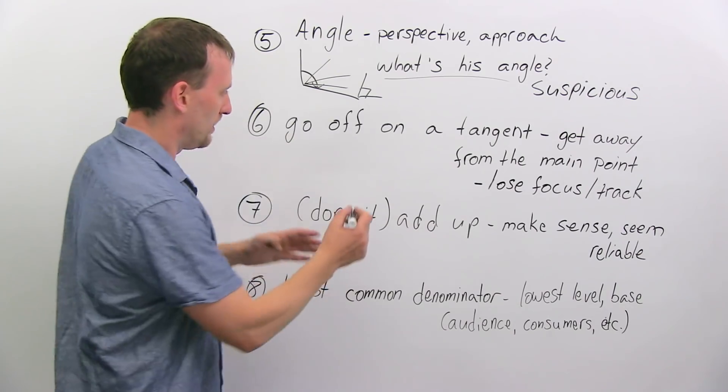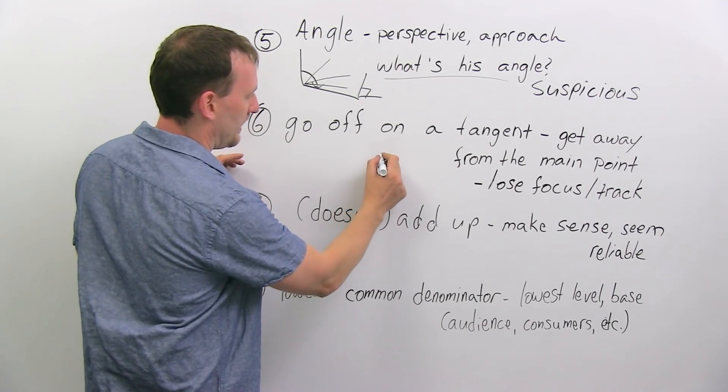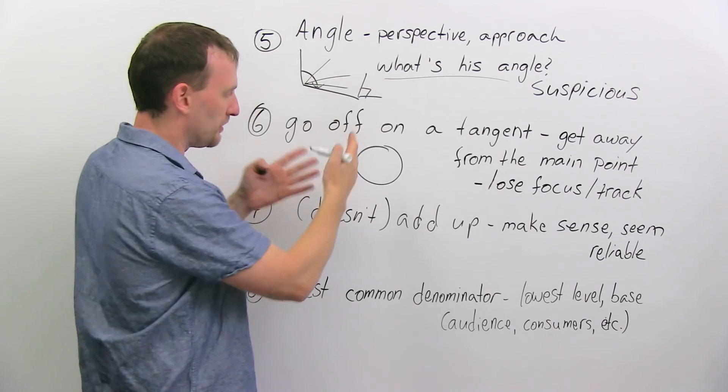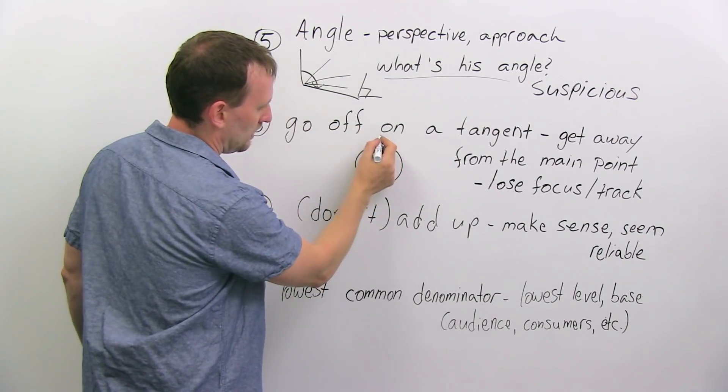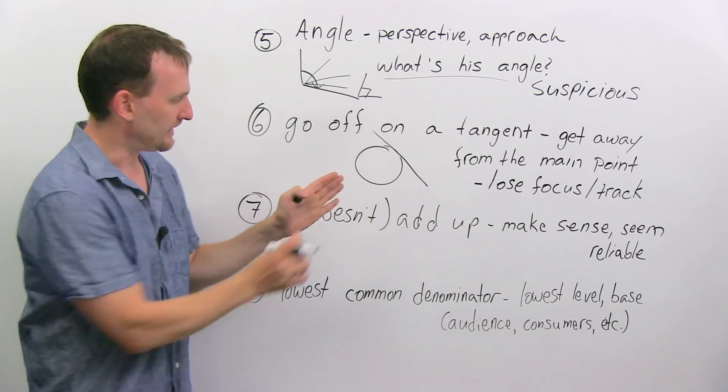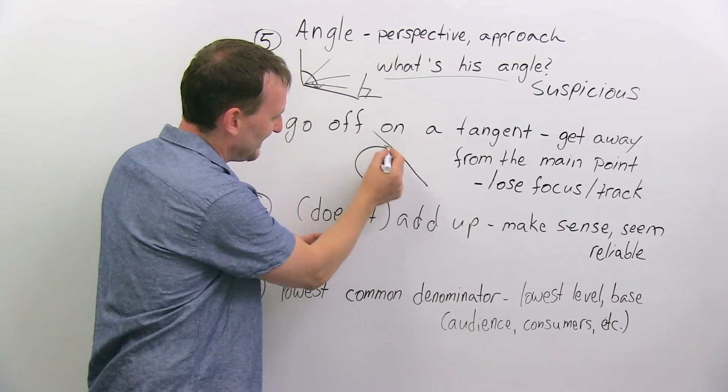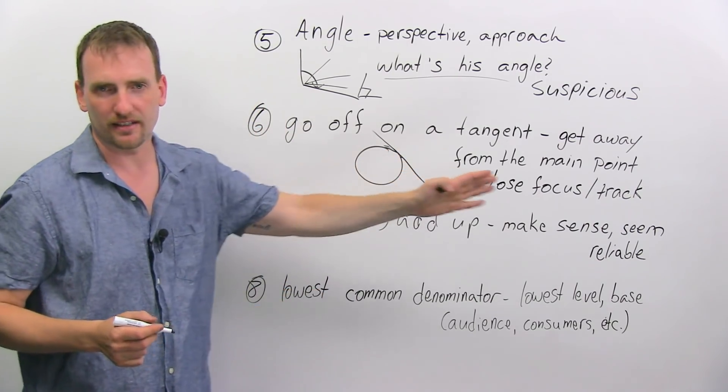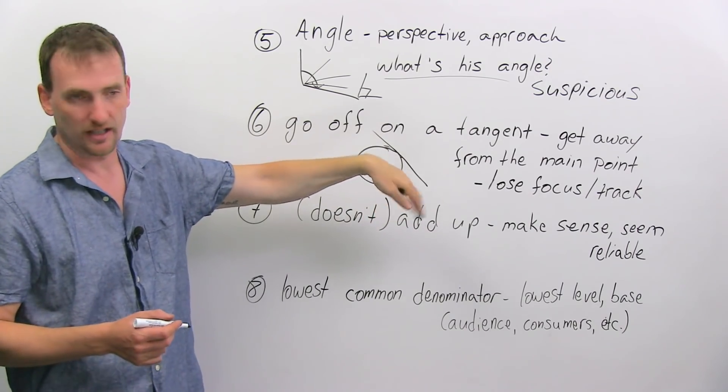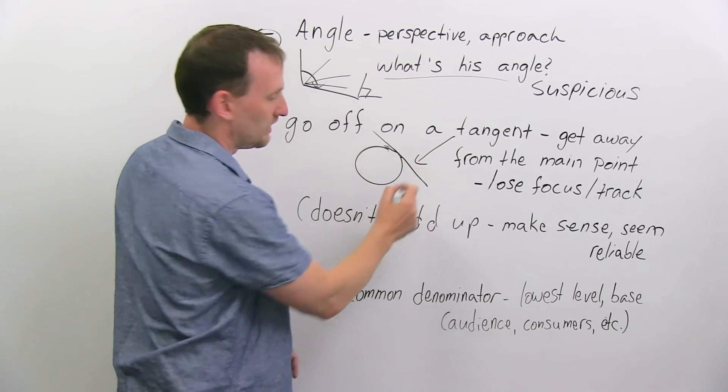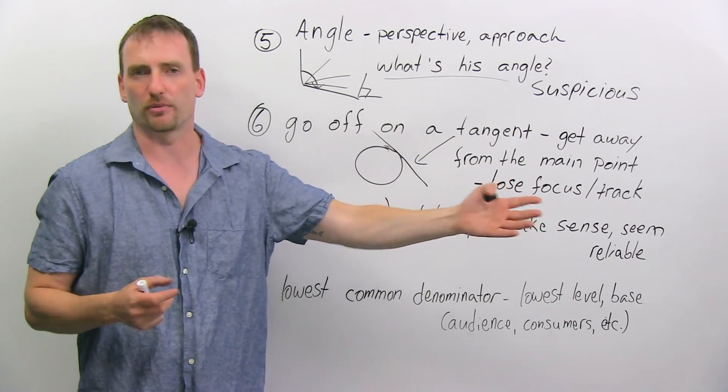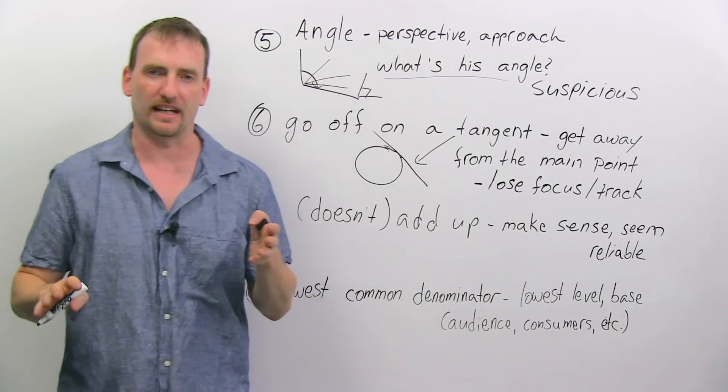Go off on a tangent. Now, if you think about math again, here's a circle, and you want to maybe measure a point, or you might want to measure something, and you think about a line touching this circle. It touches it on one point, not like the way I drew it. It touches on one point and then continues off in the distance. It doesn't go into the circle. So this line is called the tangent. So, if somebody goes off on a tangent, it means they're getting away from the central point. They're getting away from the circle and going on to something else.